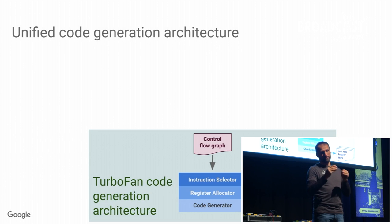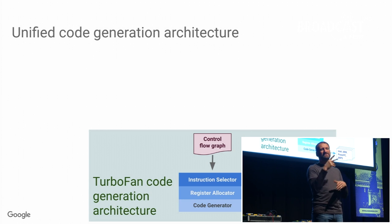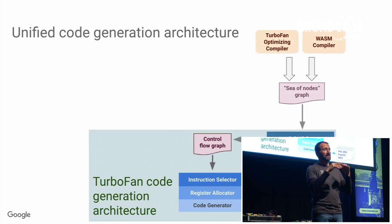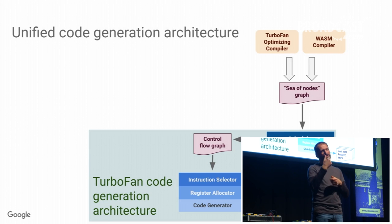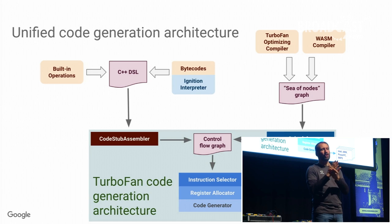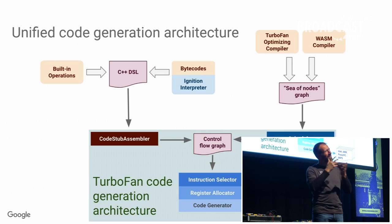From the architectural point of view, TurboFan provides a code generation architecture that we use for almost everything in V8 now. We have a compiler backend similar to what you see in other VMs, responsible for generating appropriate code for all eight platforms we support. On top of this backend, we have the actual TurboFan optimizing compiler — the JavaScript compiler — and the Wasm compiler also uses this backend. On the other side, we have a C++ domain-specific language that we use to generate the interpreter, all the built-in operations like array built-ins, string built-ins, proxy, promises — anything you use in the language is now mostly based on TurboFan.